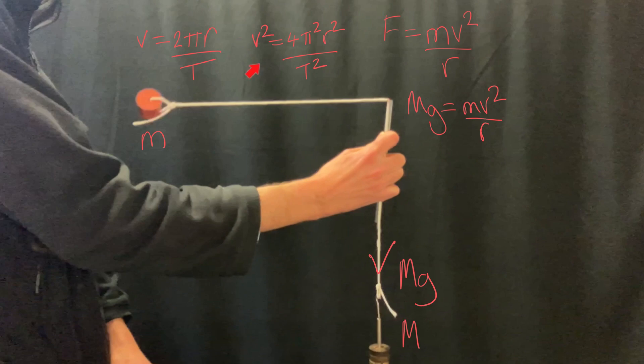We can now take this expression for v squared and replace the v squared in our Mg equals mv² over r, which gives us Mg equals m times 4π²r² divided by rT². We can cancel one of the r's on the top with the r on the bottom.